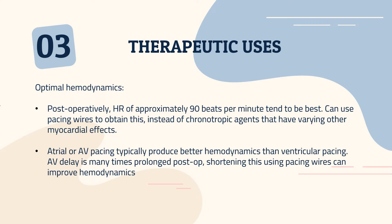For therapeutic uses, optimal hemodynamics is a very important therapeutic use. Postoperatively, a heart rate of approximately 90 beats per minute tends to be best, and we can use pacing wires to obtain this instead of chronotropic agents that have varying other myocardial effects. Atrial or AV pacing typically produces better hemodynamics than ventricular pacing alone. AV delays often prolong postoperatively, and shortening this using pacing wires can improve hemodynamics.